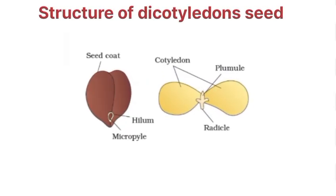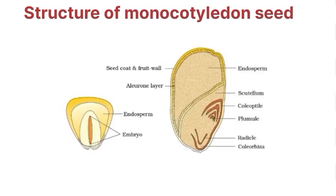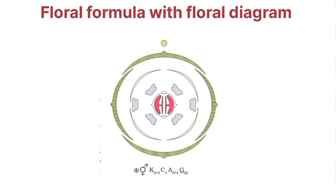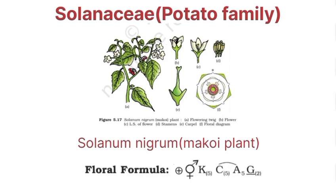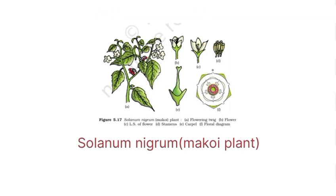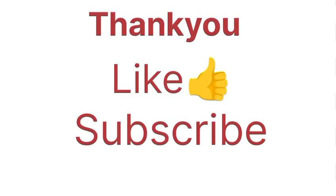Parts of a fruit: mango. Next, coconut. Structure of a dicotyledon seed and structure of a monocotyledon seed. Floral formula with floral diagram: Solanaceae — potato family, example Solanum nigrum. Thank you, like and subscribe.